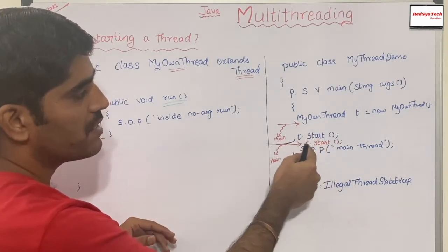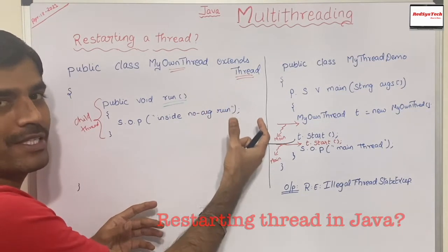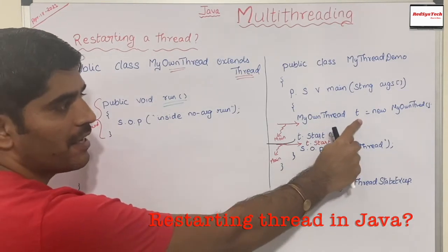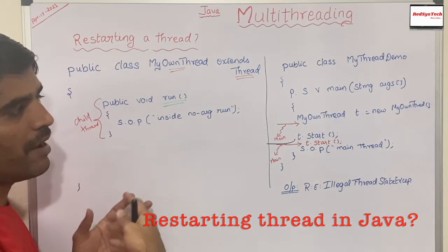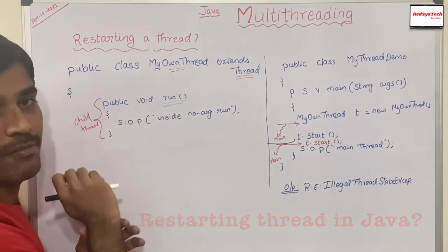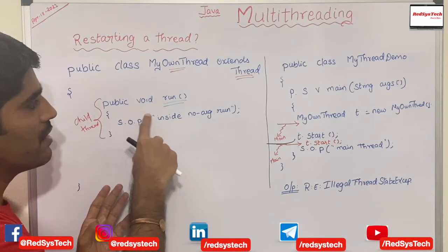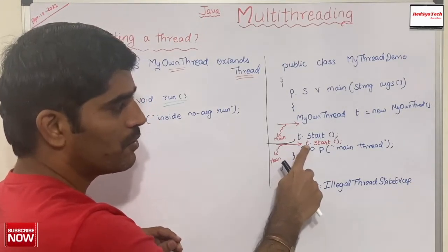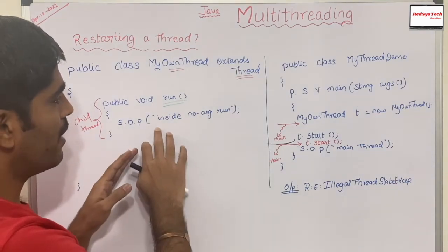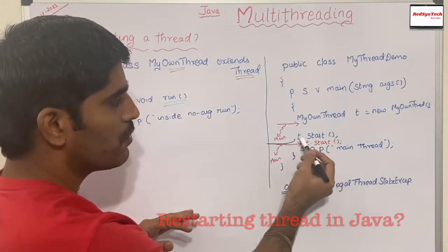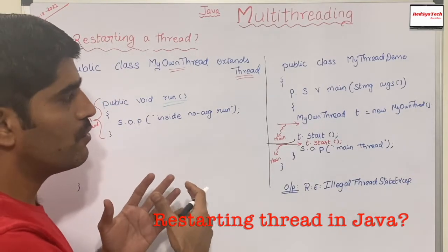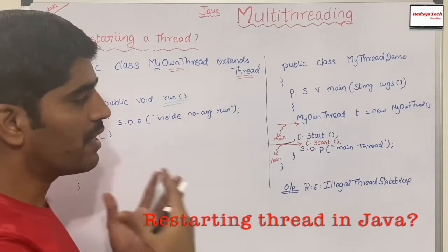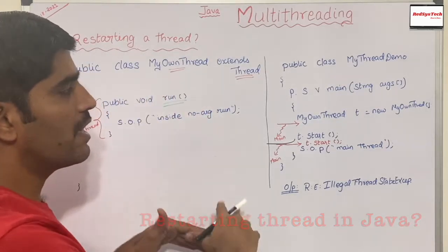In order to call this, I need to call t.start(). t.start() internally calls the start method present inside the Thread class, which registers the thread with the job scheduler and then calls the no-argument run method. Since I have overridden the run method, it is going to call that, which will be executed by the child thread. Then if I try to call t.start() again, what will happen? There is no way you can restart the same thread.